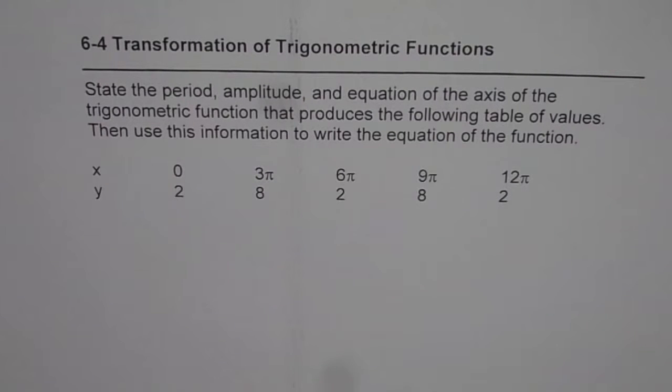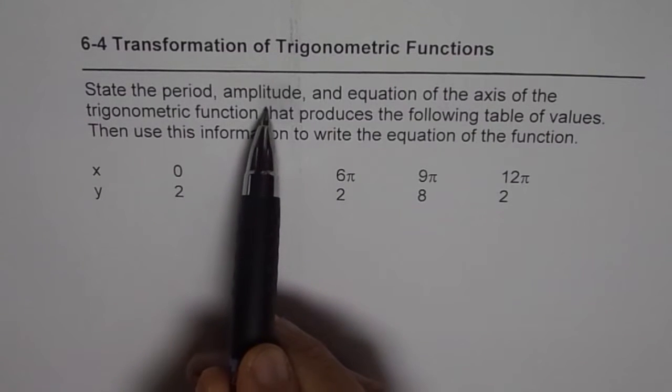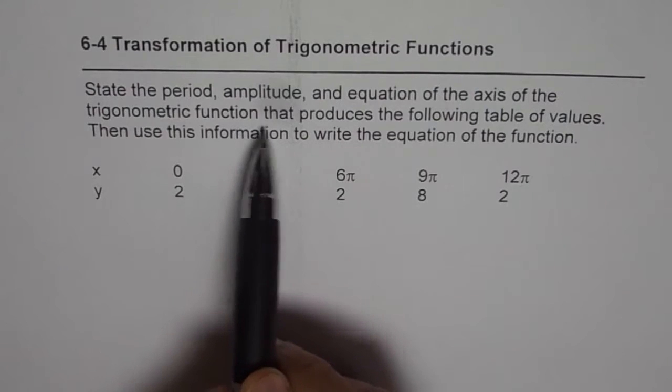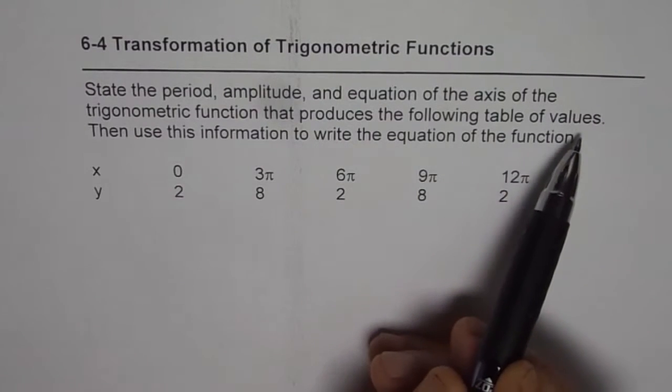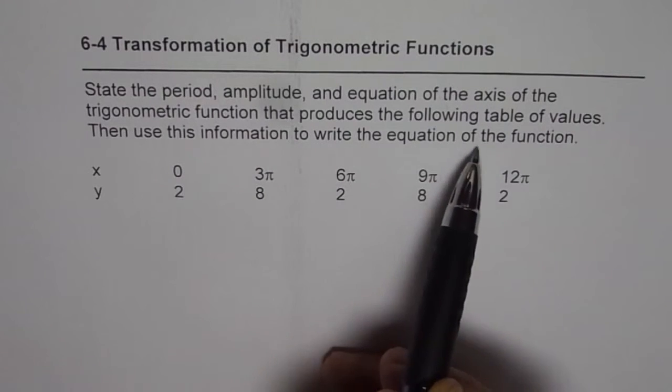I'm Anil Kumar and in this video we will learn how to quickly find an equation from given data for a trigonometric function. The question here is: state the period, amplitude, and equation of the axis of the trigonometric function that produces the following table of values. Then use this information to write the equation of the function.